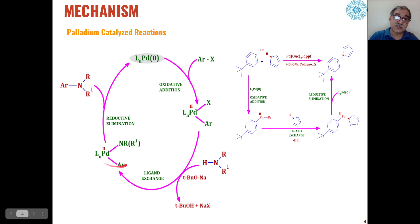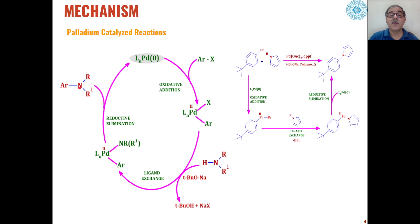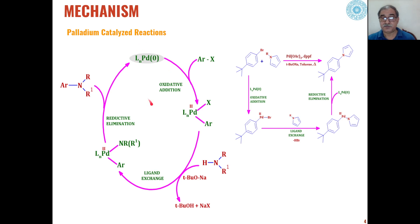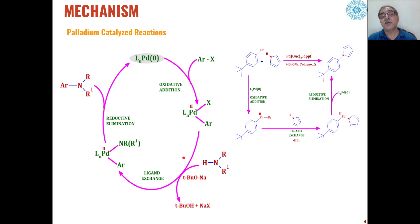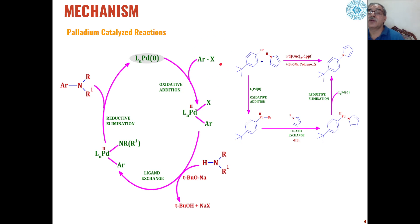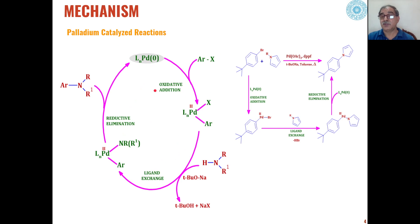This intermediate then undergoes reductive elimination for the formation of a new carbon-nitrogen bond, giving the products, and palladium(II) is converted back to palladium(0). This cyclic mechanism allows palladium(0) to react with another molecule of aryl halide or aryl sulfonyl to again produce the products.